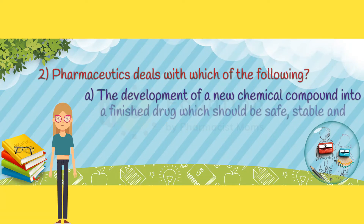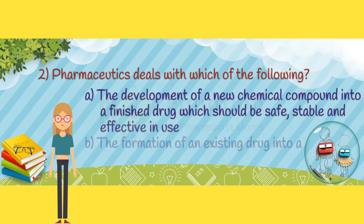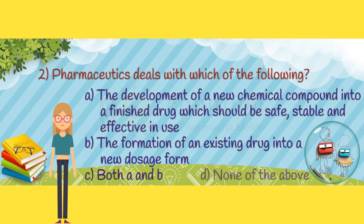Question 2. Pharmaceutics deals with which of the following? Option A: the development of a new chemical compound into a finished drug, which should be safe, stable, and effective in use. Option B: the formation of an existing drug into a new dosage form. Option C: both options A and B. Option D: none of the above.